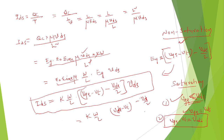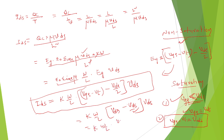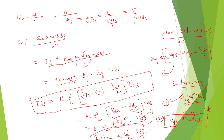The first condition and second condition together give IDS for the saturation region as K times W over L times VDS squared over 2. So like this, we need to find the VDS-IDS relationship. Thank you.